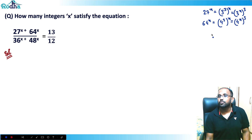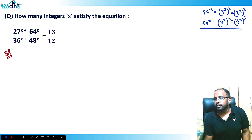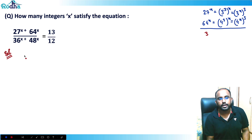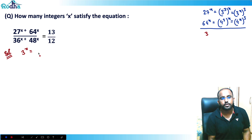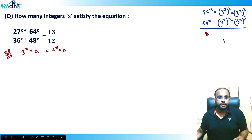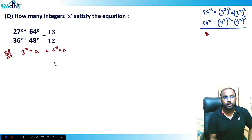To identify the identities involved, I'll assume 3^x = a and 4^x = b, so I can easily rewrite the entire equation in terms of a and b.